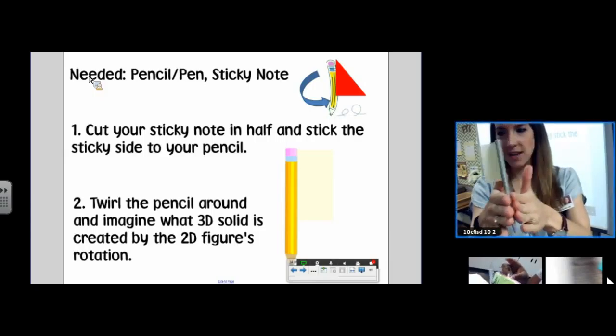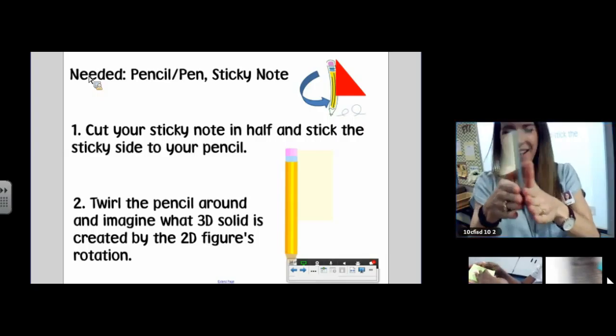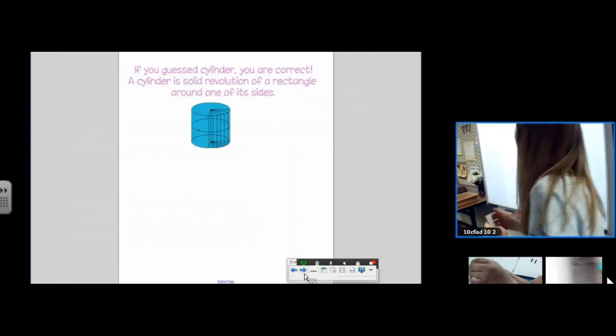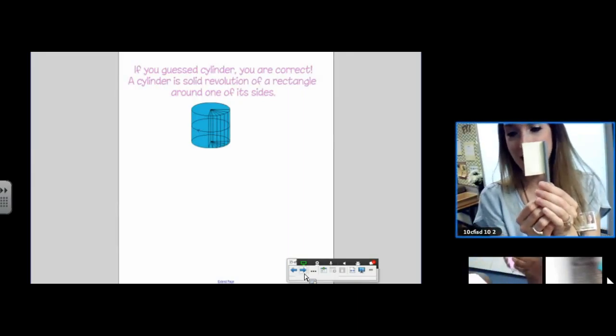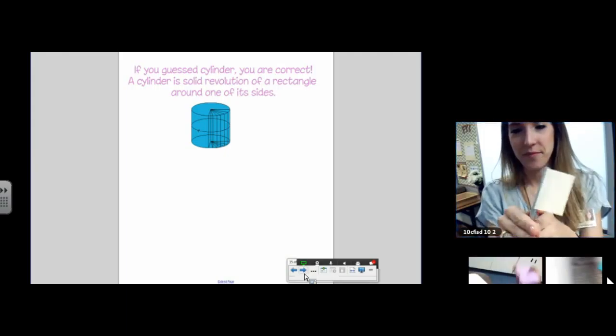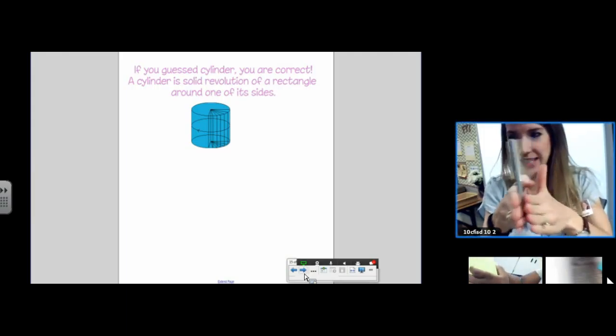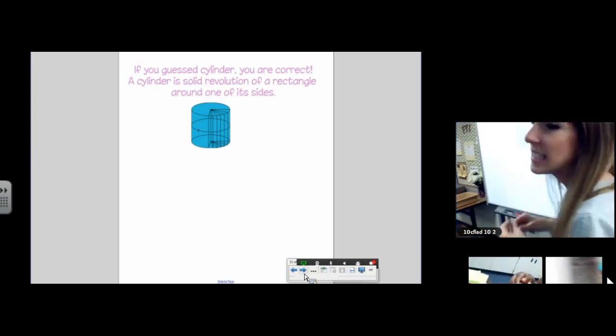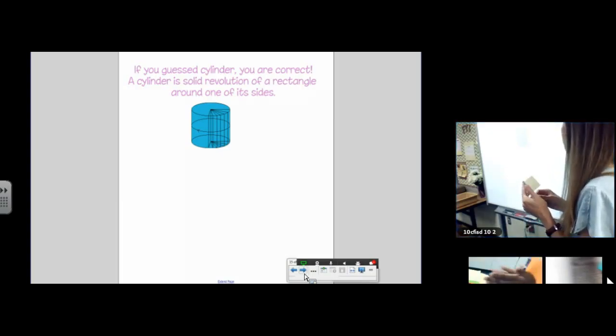What solid, can you kind of see the solid, a little bit? So what solid is created when a rectangle is rotated about one of its sides? It should look like, when you look at this really quickly, it should look like a cylinder. Kind of. It should be a cylinder. A cylinder is a solid revolution of a rectangle around one of its sides.